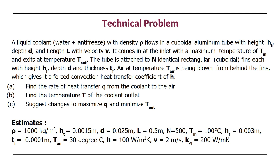The tube is attached to n identical rectangular cuboidal fins, each with height hf, depth d and thickness tf. Air at temperature T air is being blown from behind the fins which gives it a forced convection heat transfer coefficient of h. Find the rate of heat transfer q from the coolant to the air, the temperature of the coolant outlet, and suggest changes to maximize q and minimize T out.